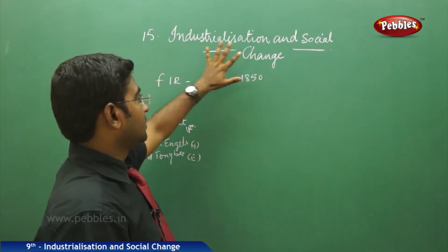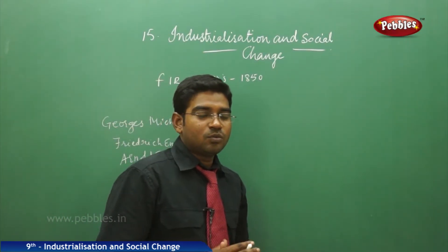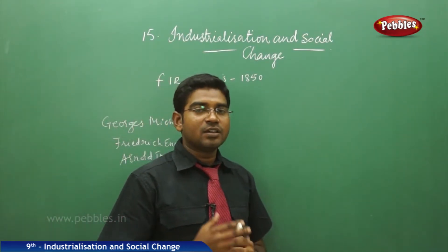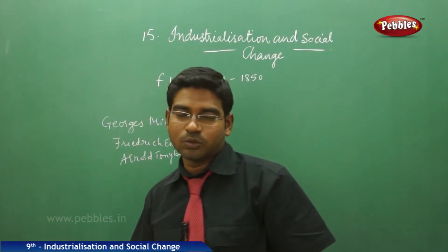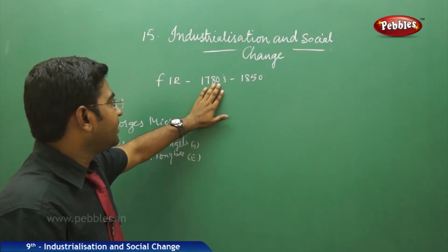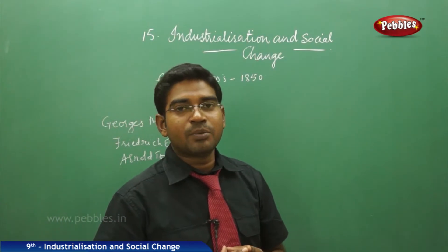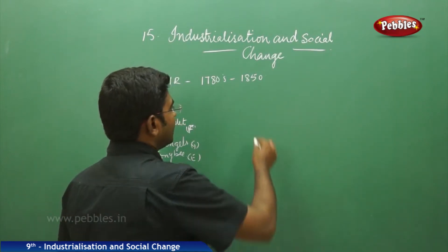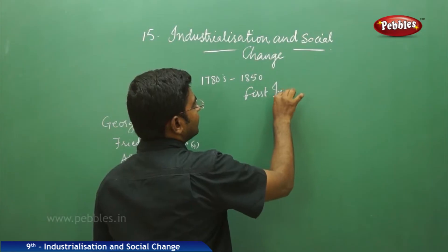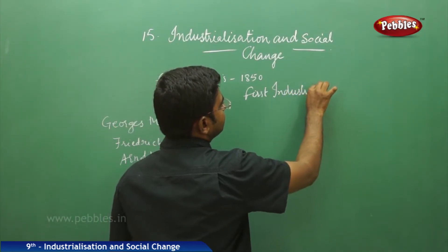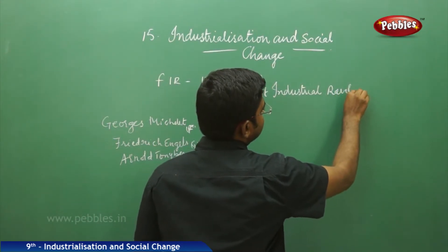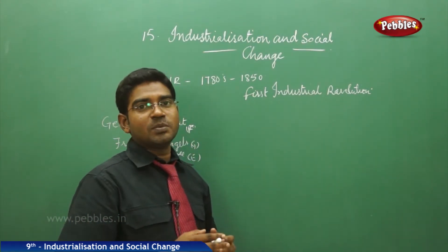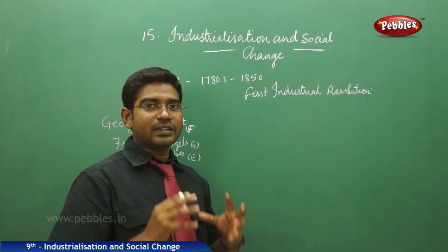Today's lesson is the 15th lesson: Industrialization and Social Change. Major industrialization started in Europe, especially in Great Britain — England, New South Wales, and surrounding regions — where industrial growth took hold. The period between 1780 to 1850 was a time when Britain achieved its full development in the industrial sector, which is why it is known as the First Industrial Revolution. The First Industrial Revolution played a crucial role in handicrafts and the handloom industries.